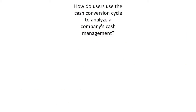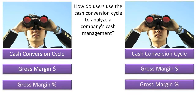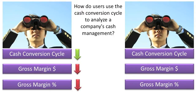How do users use the cash conversion cycle to analyze a company's cash management? Many financial users watch for trends in a company's cash conversion cycle as they relate to other amounts and ratios, such as the gross margin and gross margin percentage. What would you think about a company whose cash conversion cycle is declining and its gross margin and gross margin percentage is also declining? This may be an indication that the company has lost its market position and its pricing power, and is having to heavily discount its products to get them sold, which may not be sustainable in the long term.